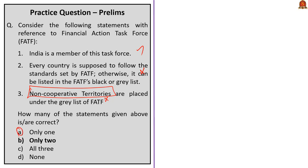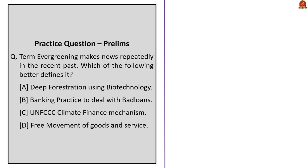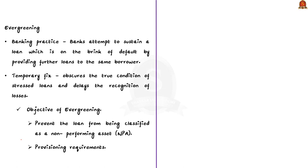Let us move on to the next MCQ, which talks about an economic concept called evergreening. The term evergreening of loan refers to a banking practice in which the bank attempts to sustain a loan that is on the brink of default by providing further loans to the same defaulting borrower. It is a temporary fix that generally obscures the true condition of stressed loans and delays the recognition of losses by the banks.